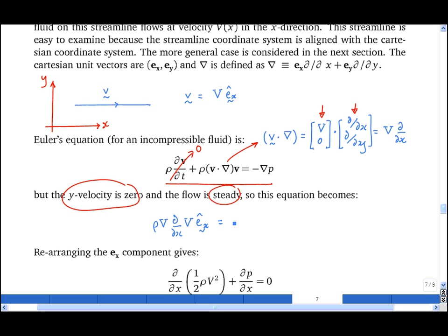And the right-hand side becomes minus, in the x-direction it's dp by dx, and in the y-direction it's minus ey dp by dy. Resolving this in the ey direction gives simply that dp by dy is equal to zero. In other words, there's no pressure gradient across the streamline.